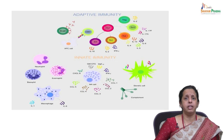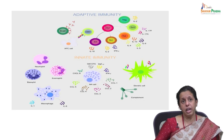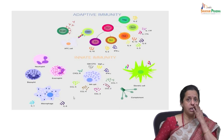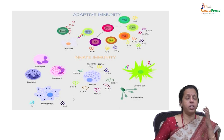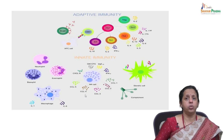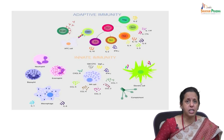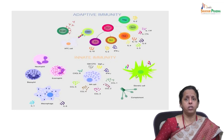NK cells produce GM-CSF and important cytokines like CCL-1, CCL-2, CCL-3, CCL-4, CCL-5, and CCL-8. Dendritic cells represent the central regulators of specific immune responses.